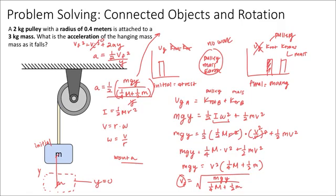So that means my acceleration will be equal to mg over one half, because one fourth times two would be one half, mass of the pulley plus the mass of the hanging mass.